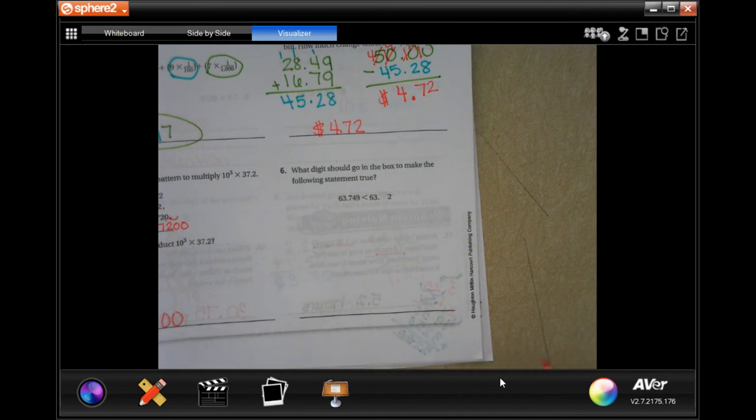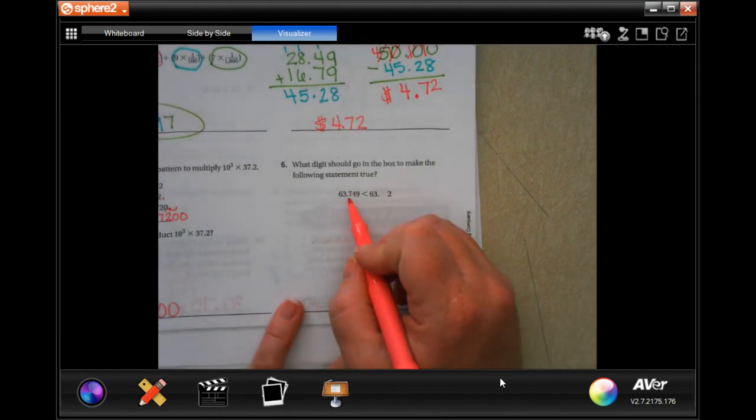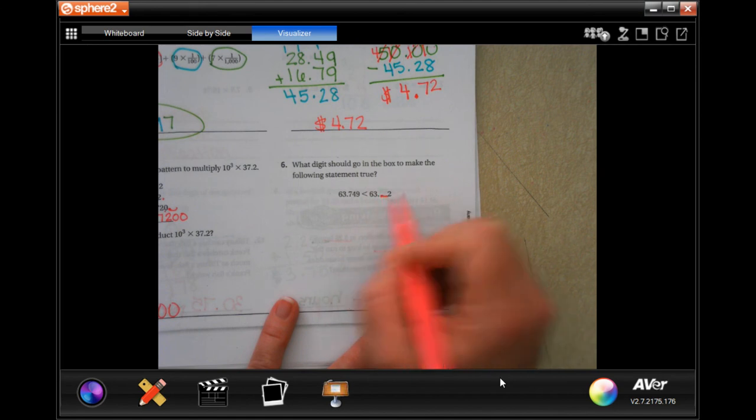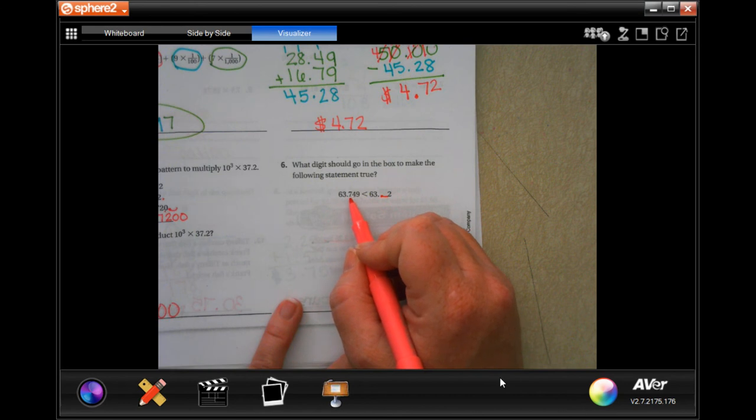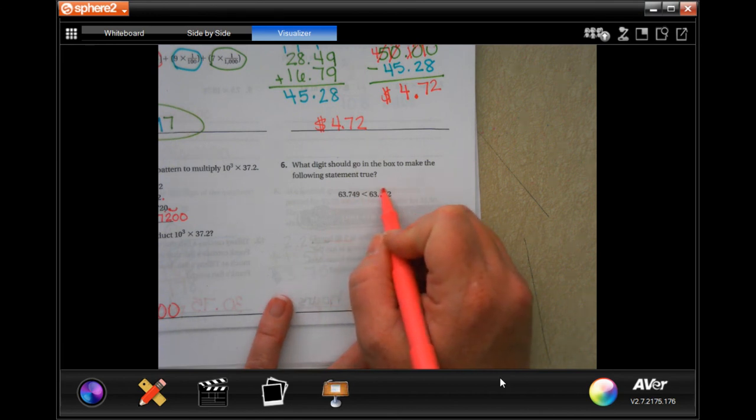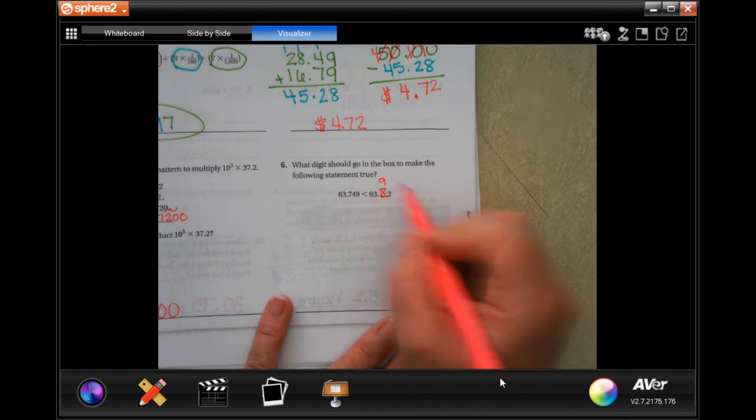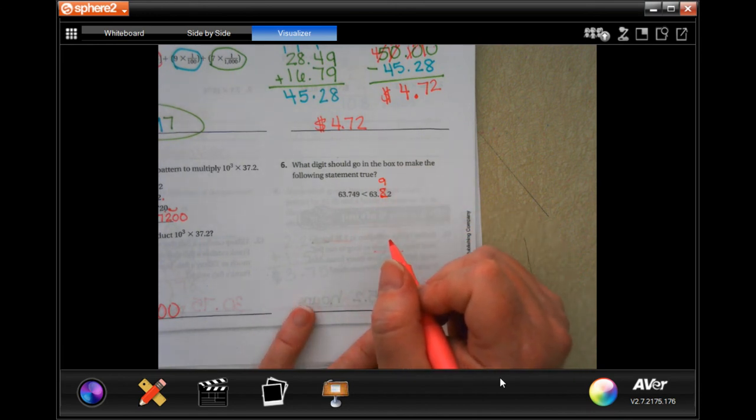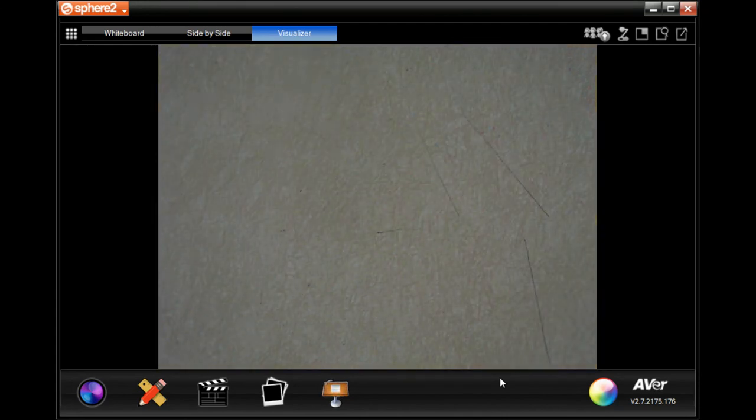What digit should go in the box to make the following statement true? What number should we put right here to make this one bigger than this one? This one has a seven right here, so if we want this number to be bigger, we need a number that's bigger than seven. So eight, you could also go nine. Those are the only two numbers that you could do.